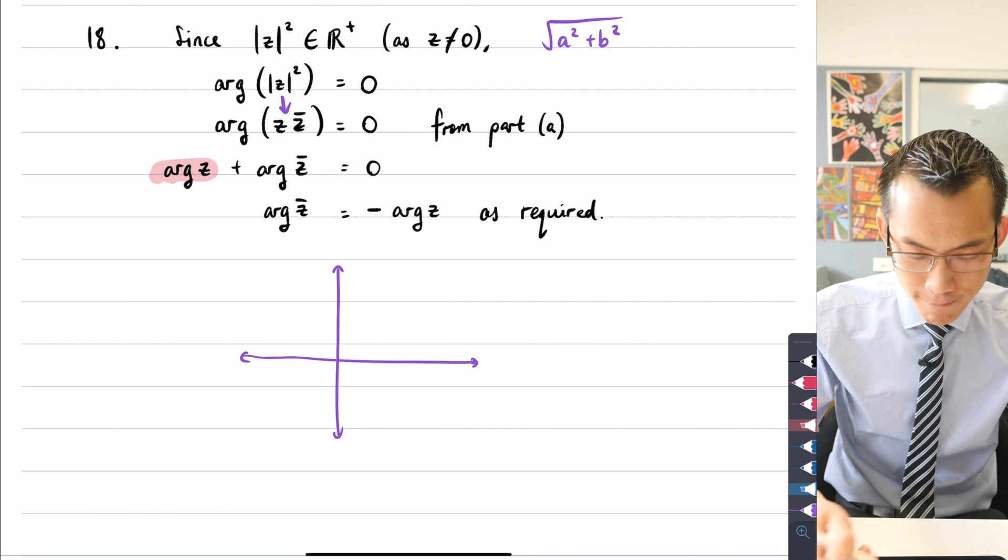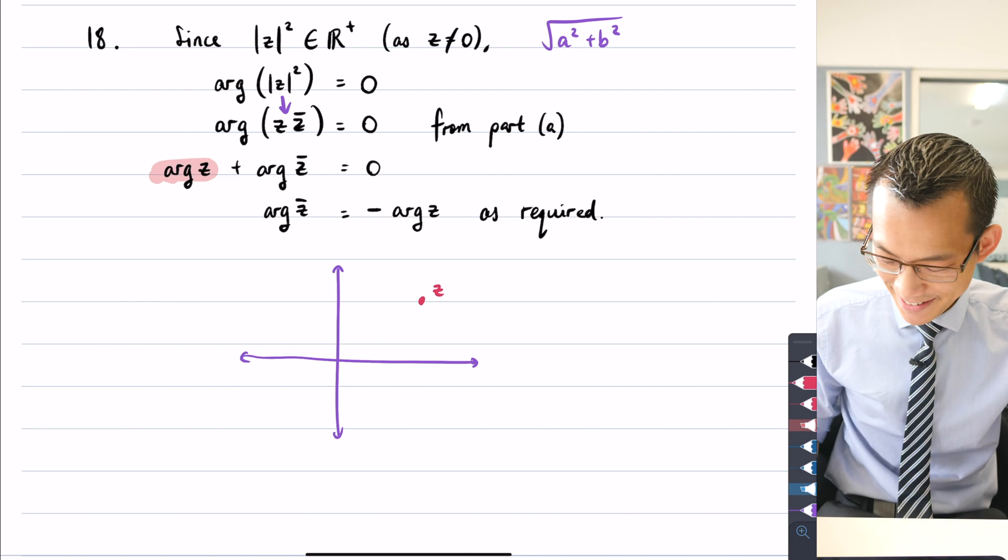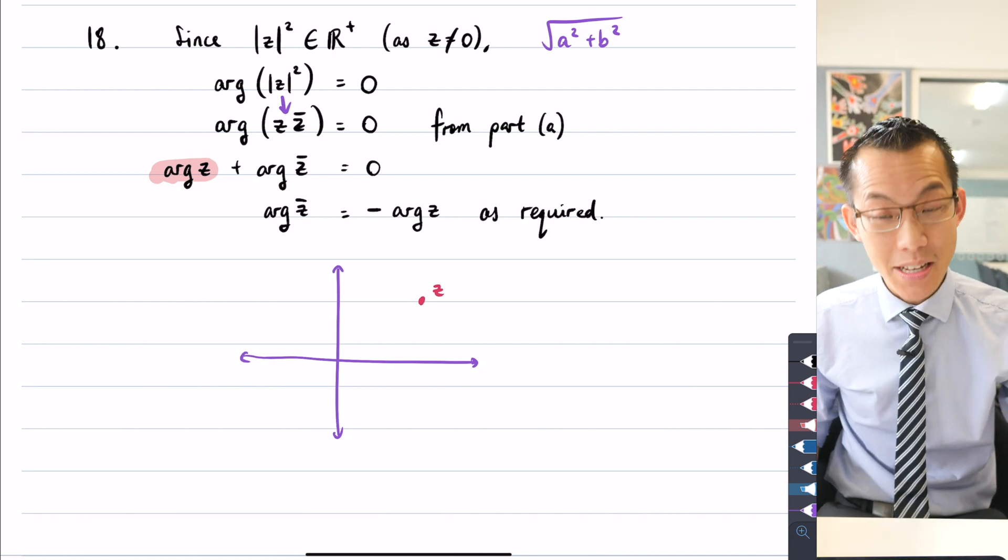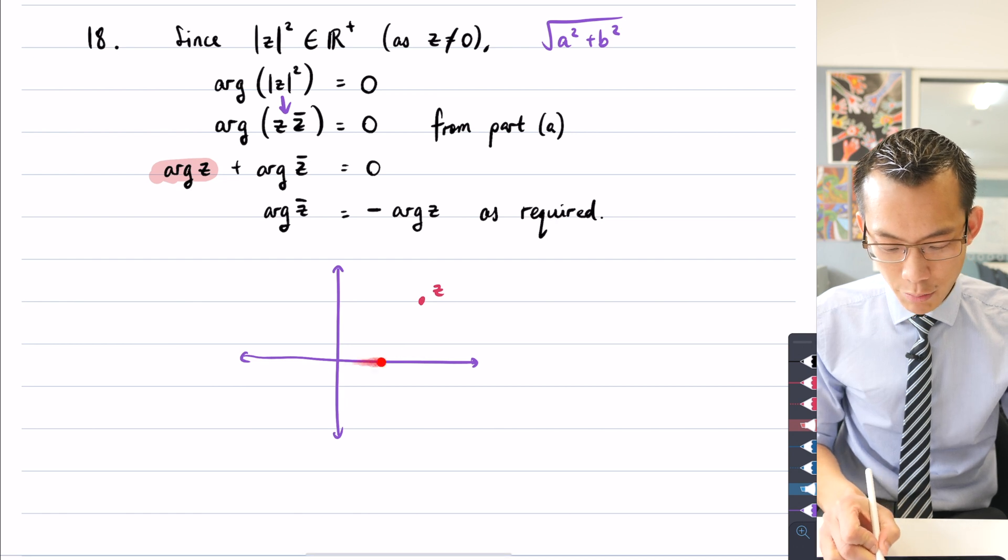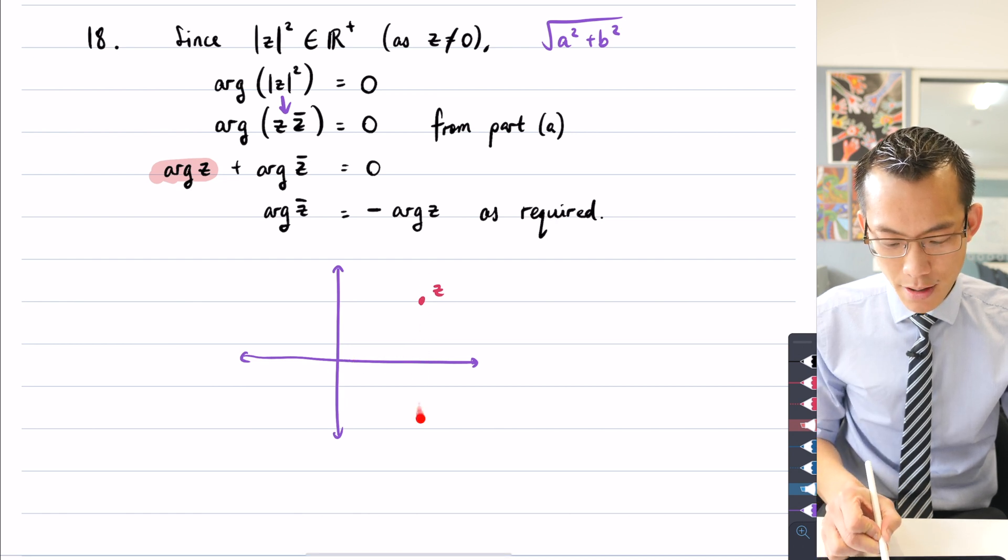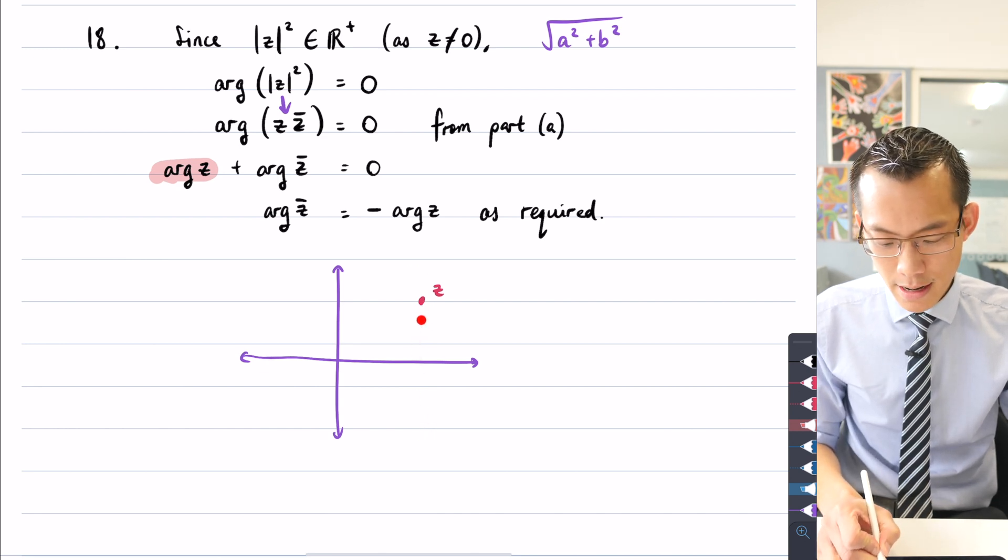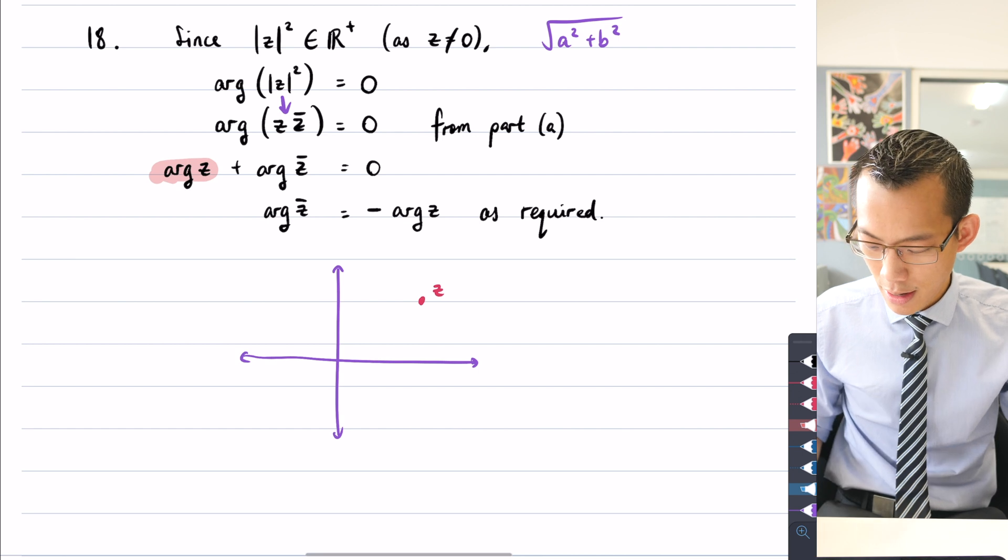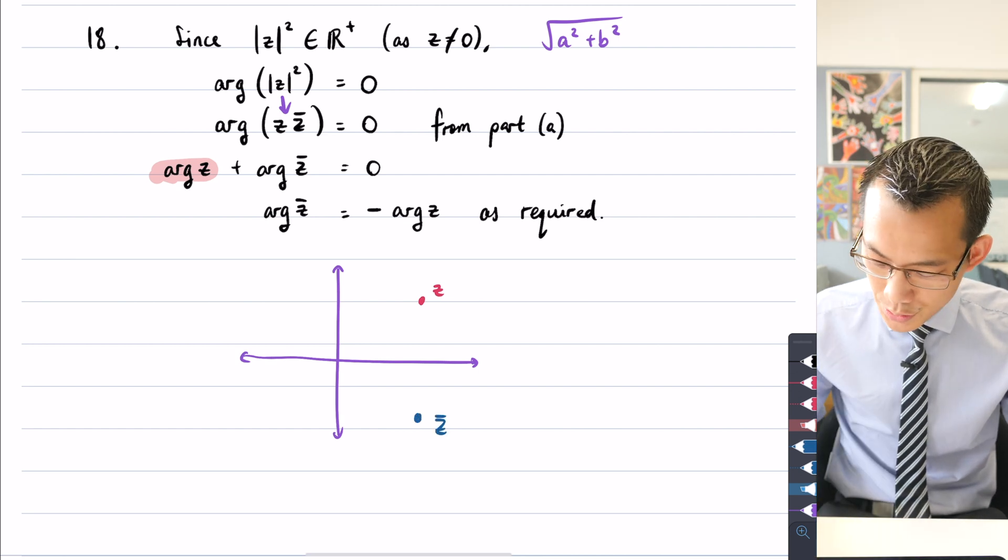If I had some arbitrary complex number z, so long as it's not on the origin, and then I think about where is its conjugate going to be? Well, the real part is going to be the same, so I'll still be on this same horizontal coordinate, but I go from this vertical part here and I flip to the opposite side. So my z bar will be somewhere around here.